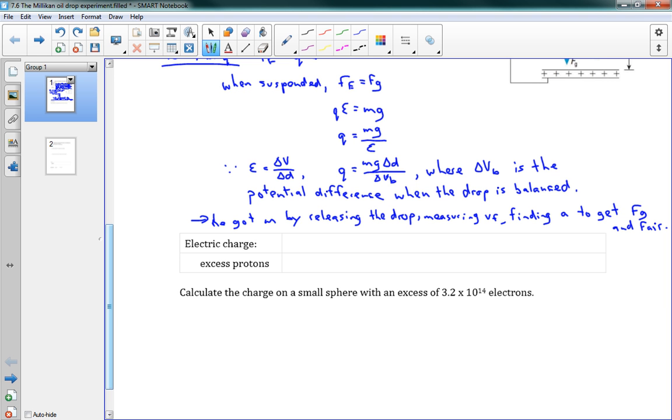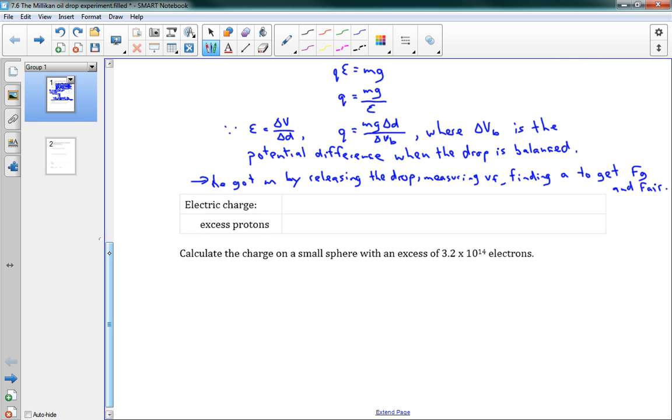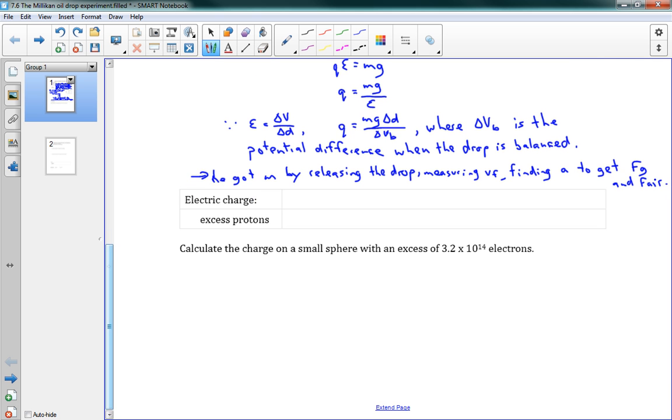So this is what he did. So he kept on repeating this experiment, he would hover it, write down the voltage he got, drop it, and use the information to get the mass so that he could do this whole equation. And what he found was, indeed his hypothesis was correct, and they were all multiples of some fundamental charge.